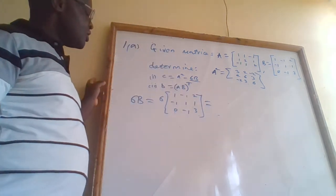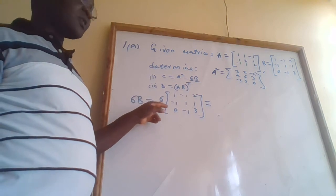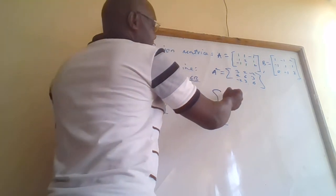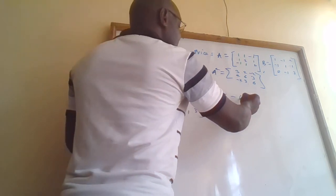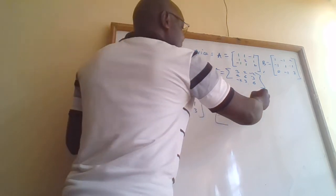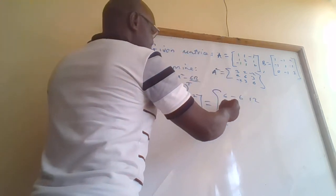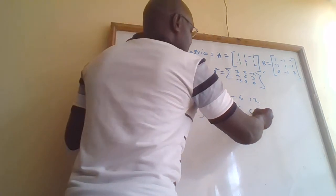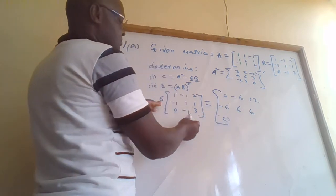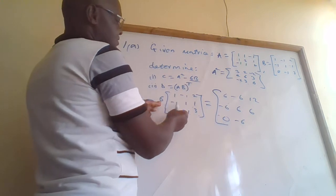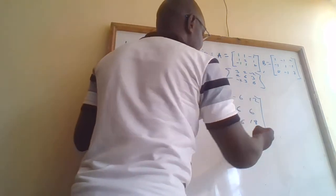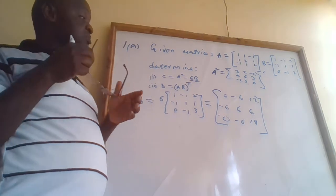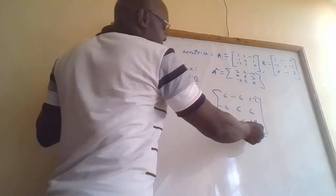So 6B equals: we make sure every element is multiplied by 6. Six times one is 6, six times negative one is negative 6, six times two is 12, six times negative one is negative 6, six times one is 6, six times one is 6, six times zero is 0, six times negative one is negative 6, and six times three is 18. So that is our 6B matrix: 6, negative 6, 12 in row one; negative 6, 6, 6 in row two; 0, negative 6, 18 in row three.